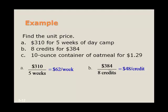A 10-ounce container of oatmeal for $1.29. So in this case, if we write this as a ratio, we've got the dollar amount on top, 10 ounces at the bottom. So it looks like we're going to find the unit price per ounce. So we're going to divide 10 into $1.29. And in that case, you move the decimal place one unit over to the left, and you get 0.129, so that's about 12 or 13 cents per ounce.